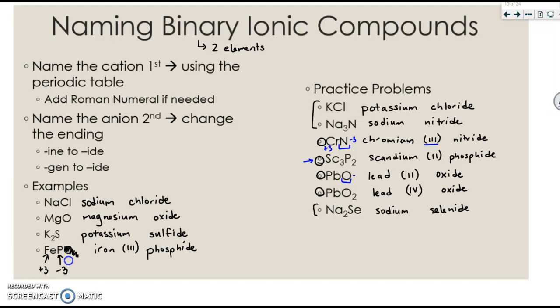Oxygen is negative 2. Therefore, our lead had to be positive 2. In the other example, oxygen is negative 2, but there are two of them. So we multiply that for an overall negative charge of negative 4. Therefore, the lead has to be positive 4.